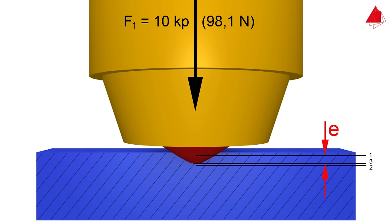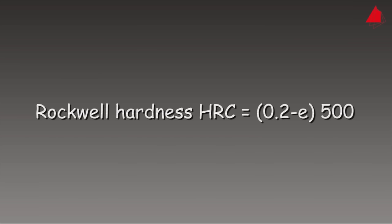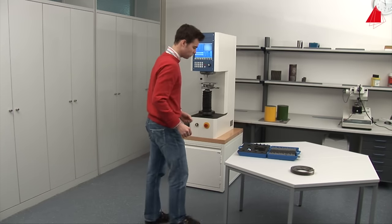This is how the Rockwell hardness is calculated: Rockwell hardness HRC equals 0.2 minus permanent depth of indentation E in millimeters times 500. Let's take a look at how the test is carried out in practice.